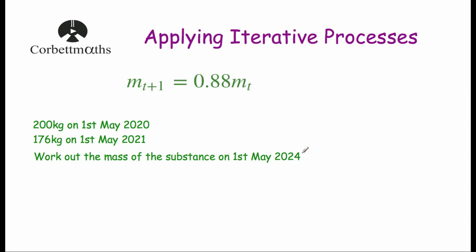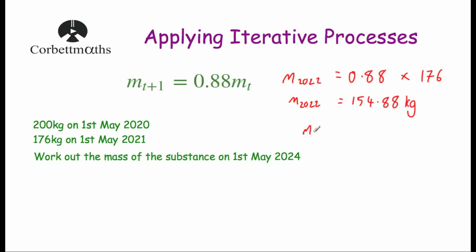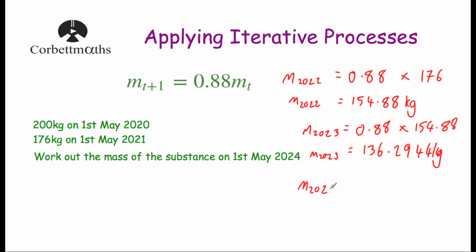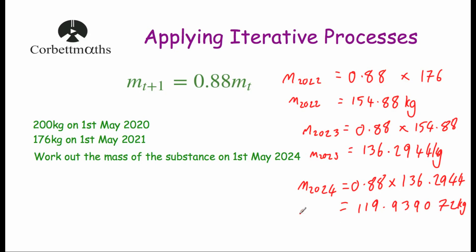We want to find the mass in 2024, and we know the mass in 2021 was 176 kg. The mass in 2022 equals 0.88 times 176, which gives 154.88 kilograms. The mass in 2023 equals 0.88 times 154.88, which gives 136.2944 kilograms. Finally, the mass in 2024 equals 0.88 times 136.2944, which gives 119.939072 kilograms — or 119.939 kilograms to three decimal places.